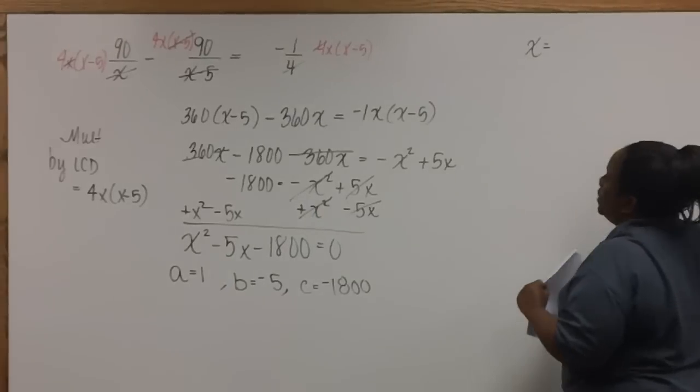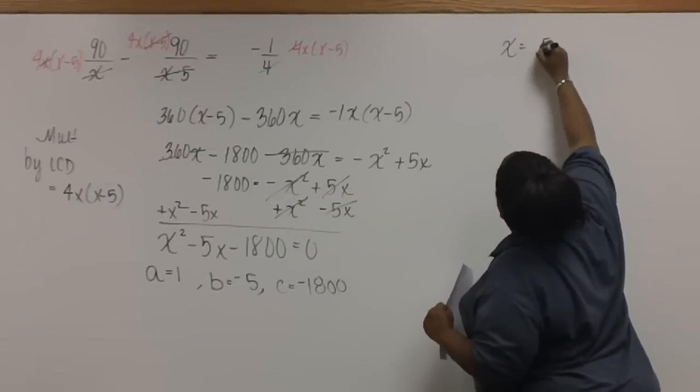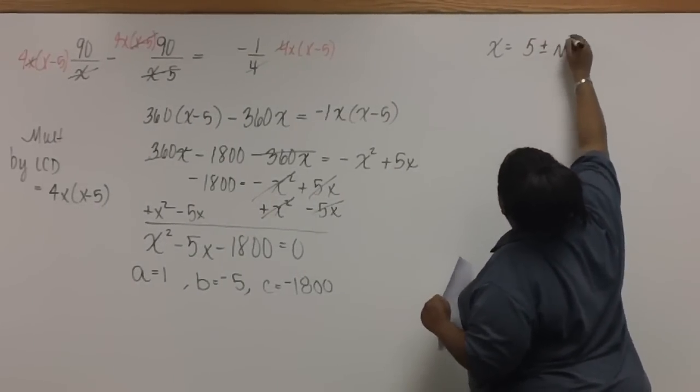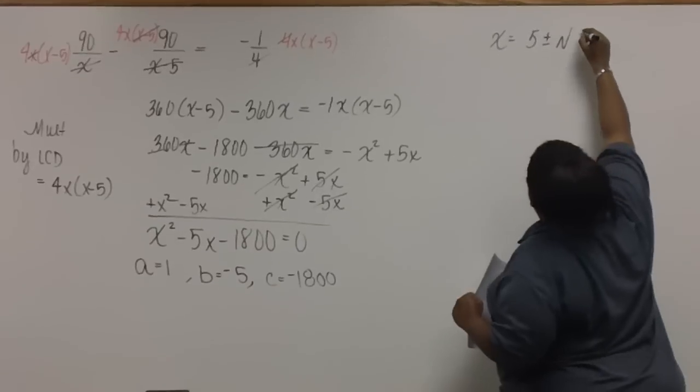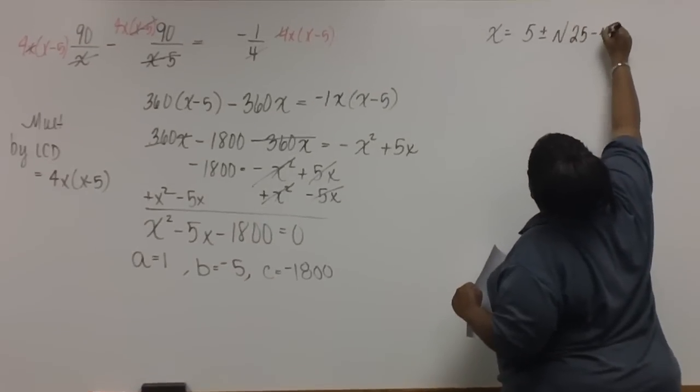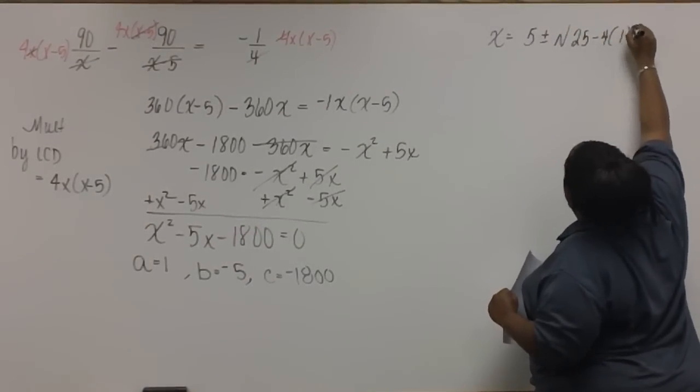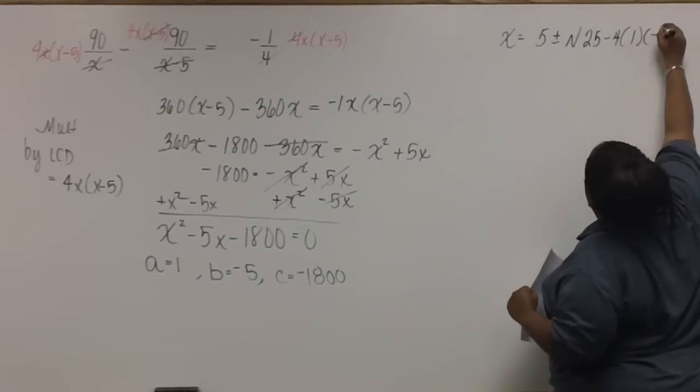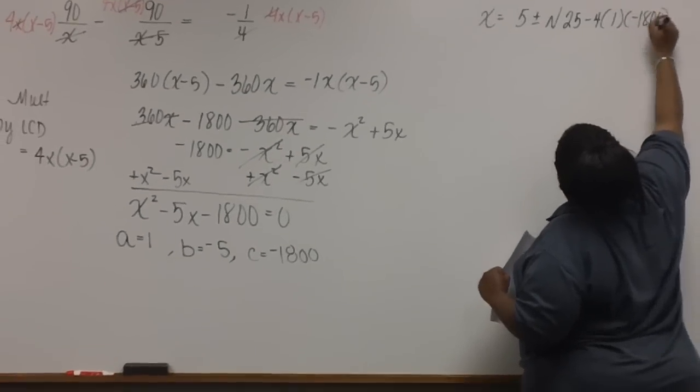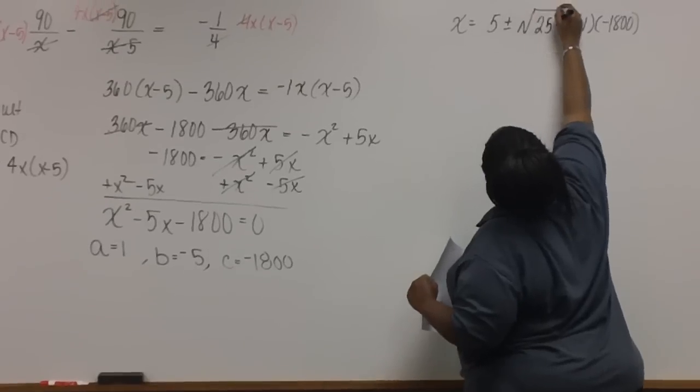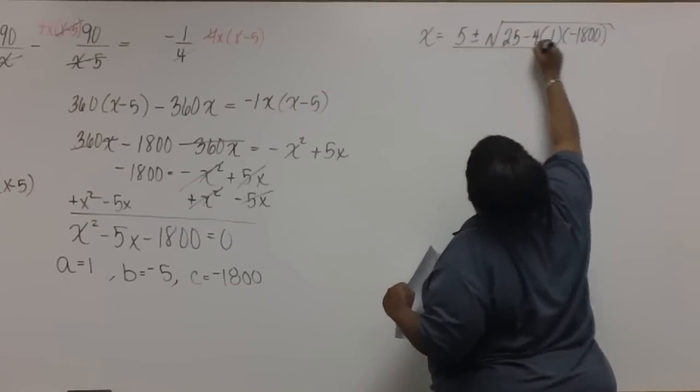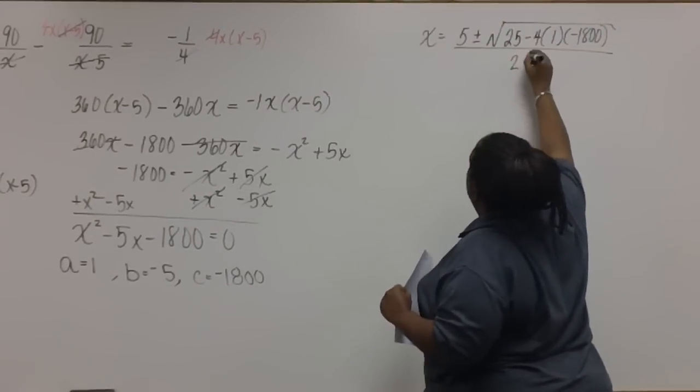Don't forget to change your sign on B. We have 5 plus and minus. Squaring B, we have 25 minus 4 times A times C, all divided by 2 times A.